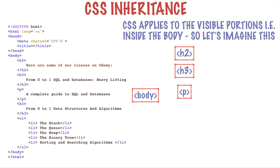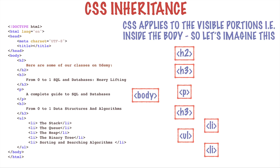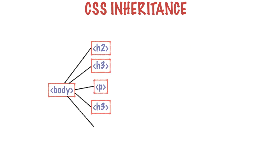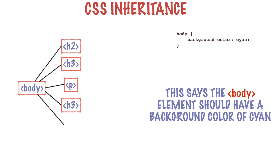Let's consider what the hierarchical structure in this HTML page looks like. We have the body element, which can be thought of as the root. This then has h2, h3, and p elements. It also has an unordered list. That unordered list, represented by a ul tag, in turn has a couple of list elements or li tag elements. The question is: when we apply a CSS style or rule to the body element, what elements are going to be governed by this rule?